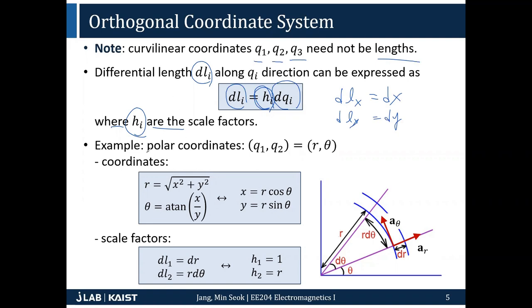But let's take an example of polar coordinate. In this case, r is length, but theta is angle. It's not a length. So in order to get an infinitesimal length, you have to multiply something.